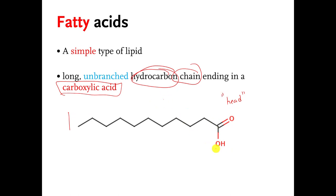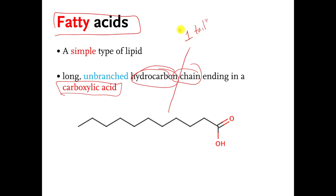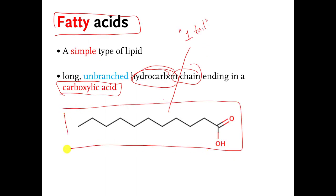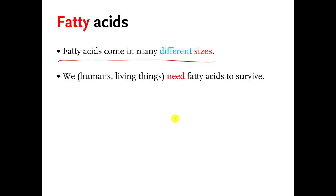I'm going to expect you to recognize different types of lipid molecules. Fatty acid molecules — if I ask you to recognize them — all fatty acids have one tail, and that's going to be the easiest way for you to recognize them. There are many different kinds of fatty acid molecules. The tail can be longer or shorter, and there are other things that can modify what the tail looks like.